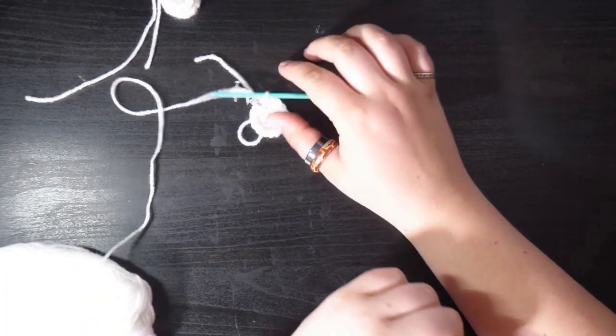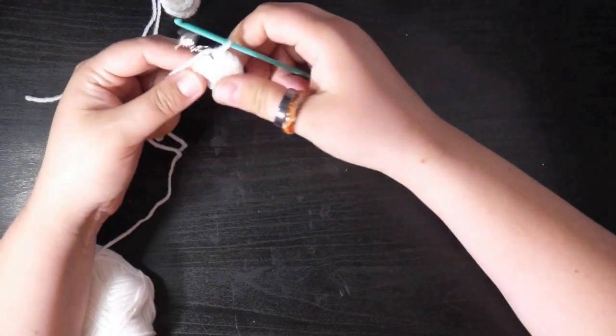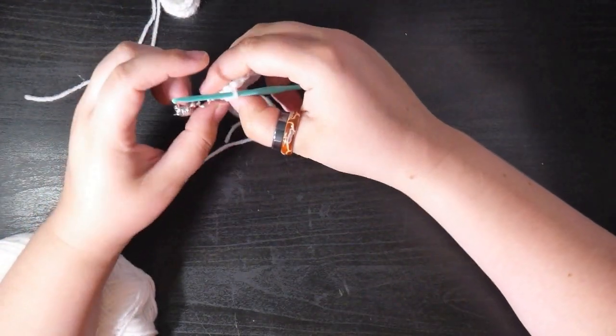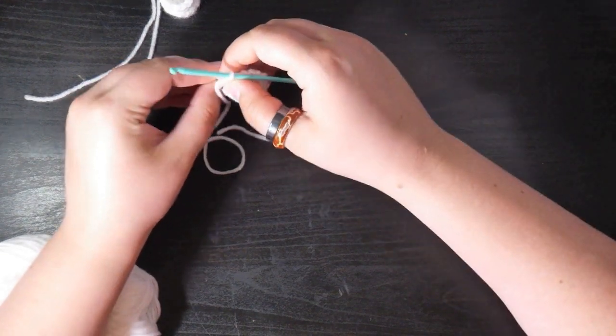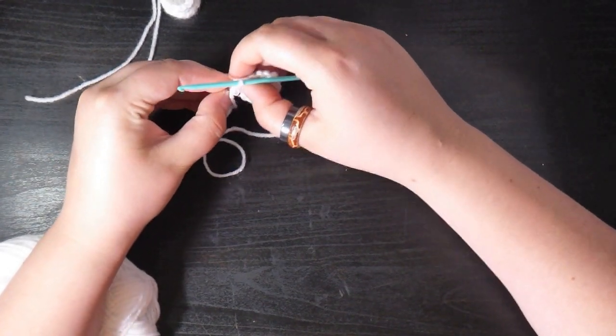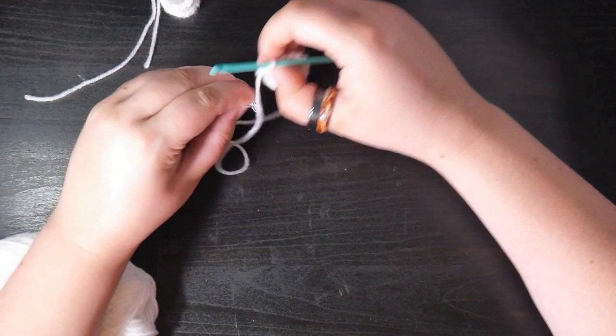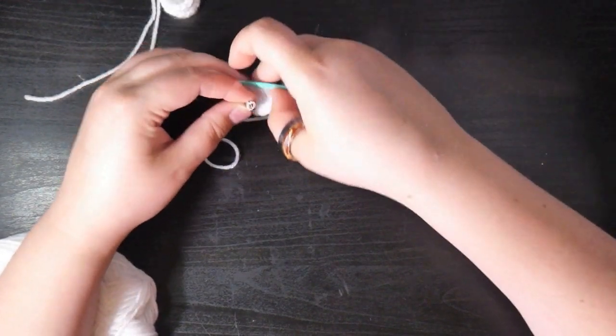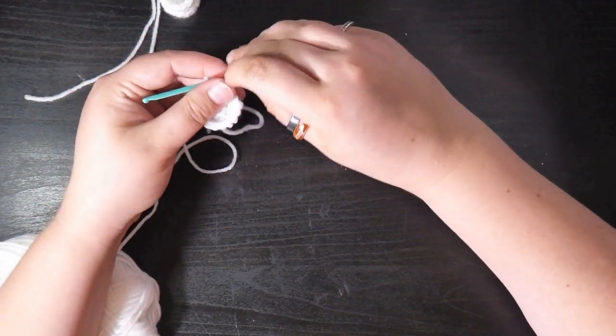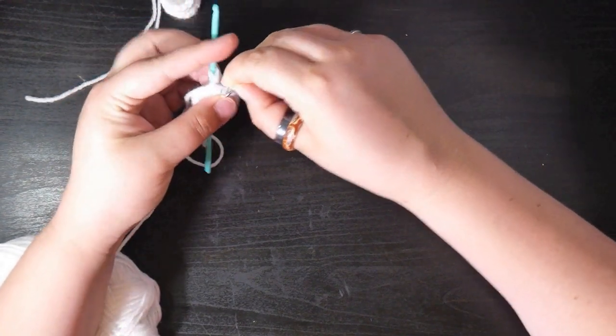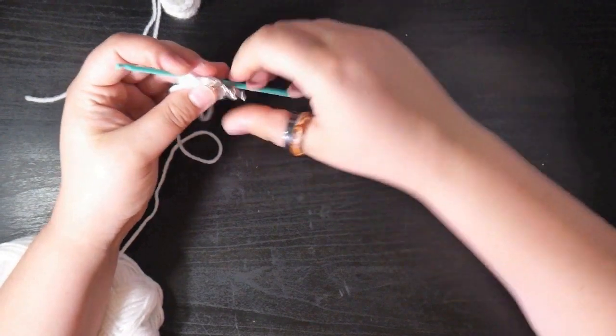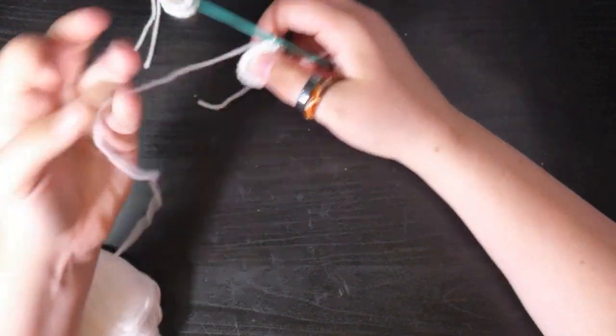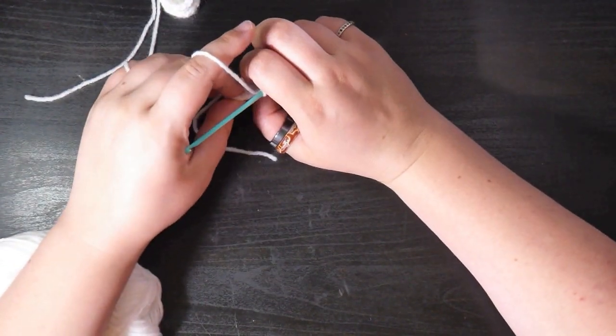So now we've finished round number three. We will undo our stitch marker and pop it on the final stitch of our round. And we're ready to start round number four.